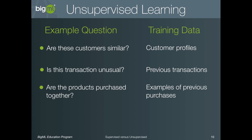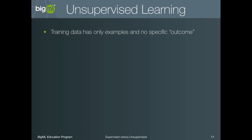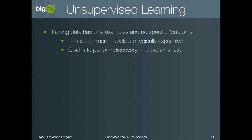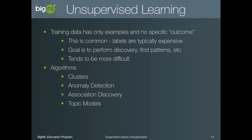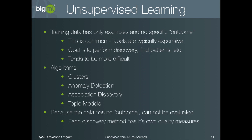What are the key characteristics of unsupervised learning? First, the training data has only examples and no specific outcome. This is actually more common, as labeled data is typically hard to come by and very expensive to generate. The goal in unsupervised learning is to perform discovery rather than to predict, and it is worth noting that this is typically less well defined and therefore more difficult. The BigML algorithms for unsupervised learning include clusters, anomaly detection, association discovery, and topic models. Note that because the training data has no specific outcome, we cannot evaluate these algorithms as easily as in the supervised case, since there is no ground truth to compare to. However, each unsupervised technique has its own quality measures that specify the strength or relevance of the patterns being discovered.